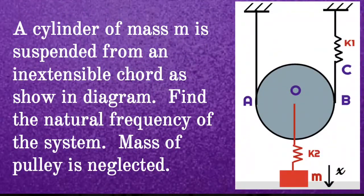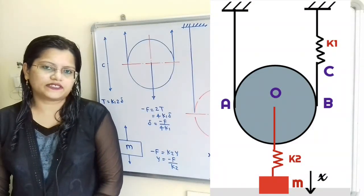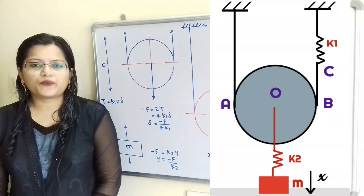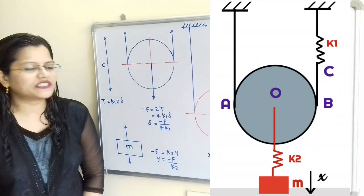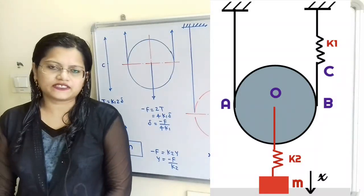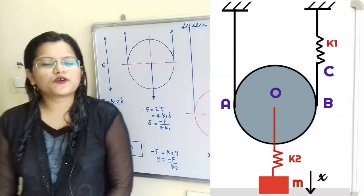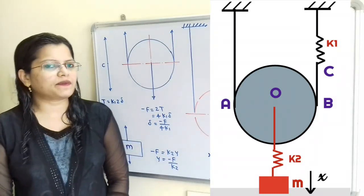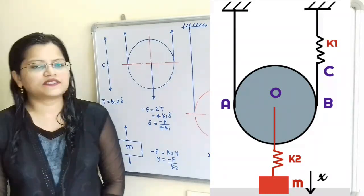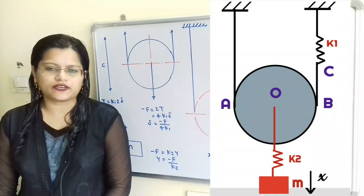Given question: a cylinder of mass M is suspended from an inextensible cord as shown in the diagram. Find the natural frequency of the system; mass of the pulley is neglected. Let us understand the given system. Through the center of the pulley, mass M is suspended, through which the spring is also connected with stiffness K2. This pulley is attached to the inextensible cord and on the other end, spring with stiffness K1 is also connected to the pulley.